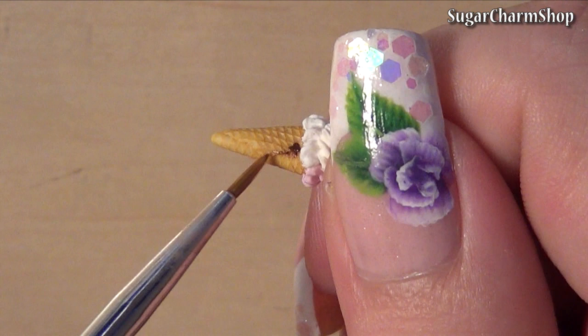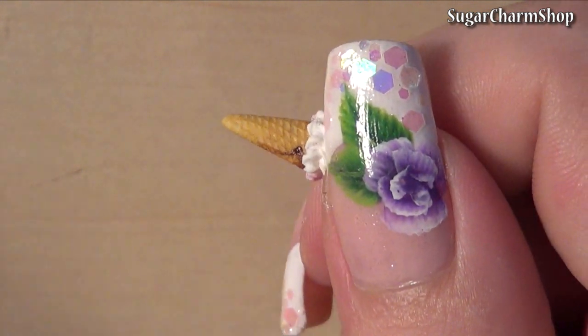After baking, add some brown acrylic paint to the cone, then seal with glaze, and you're done.